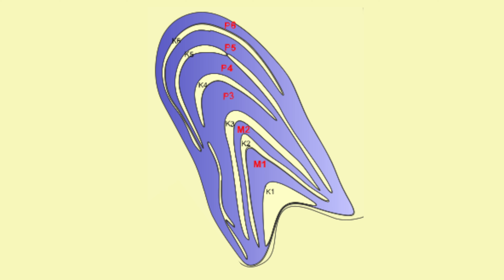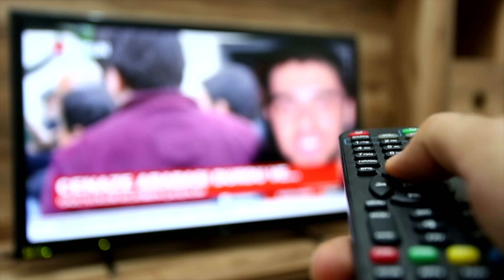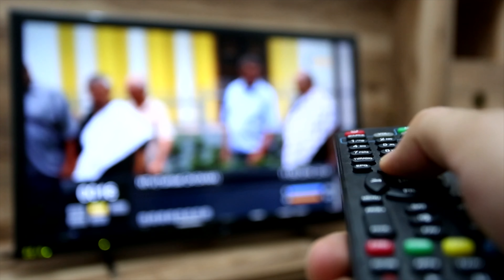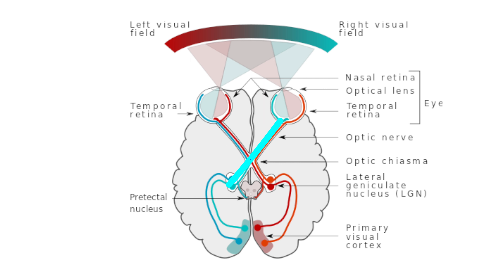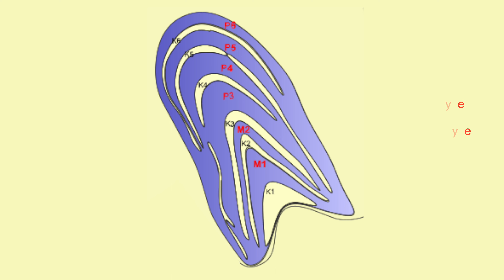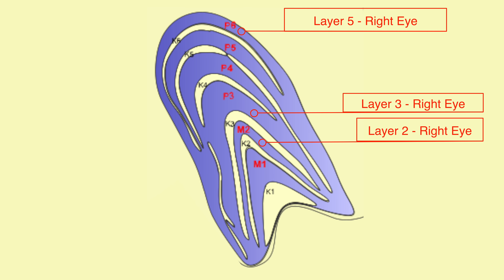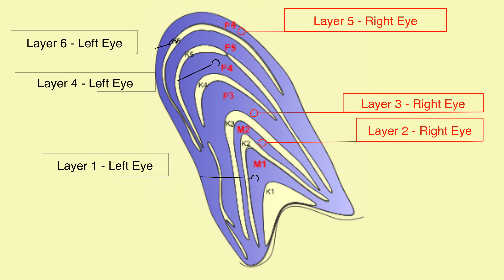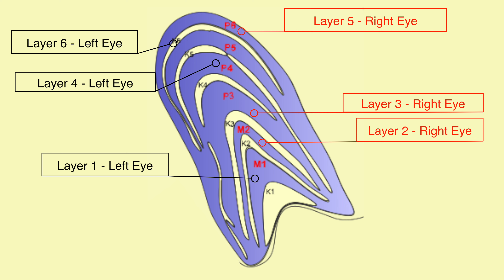If we could take a cross-section of your LGN, we'd see six distinct layers of cells. These layers are like the different channels on your TV, each one carrying a different type of visual information. The inputs to the LGN are separated by eye — each eye sends axons to both sides of the brain. For instance, the right eye sends axons from the right nasal retina to the left LGN and from the right temporal retina to the right LGN. The same applies to the left eye. For the right LGN, layers 2, 3, and 5 receive input from the right eye, while layers 1, 4, and 6 receive input from the left eye.